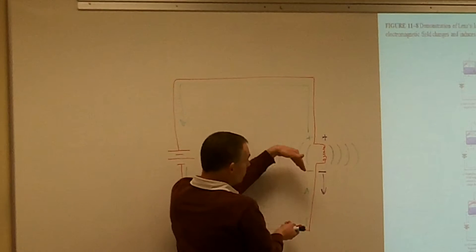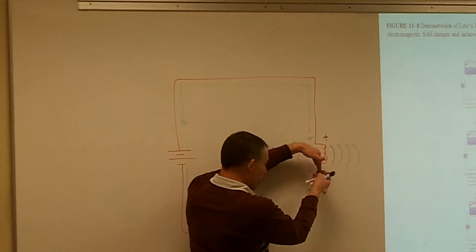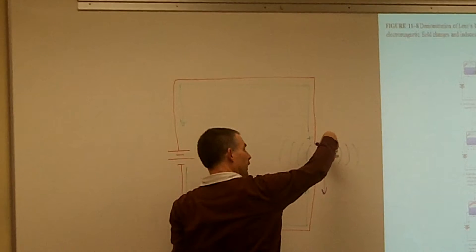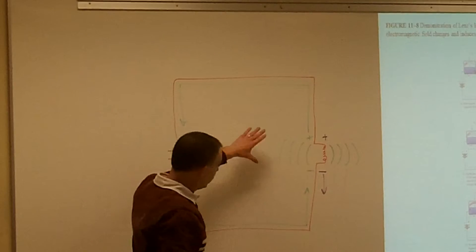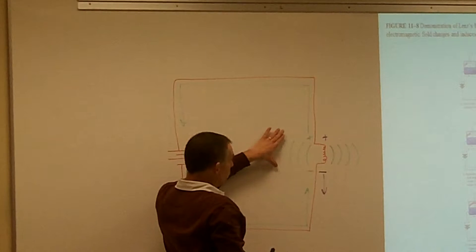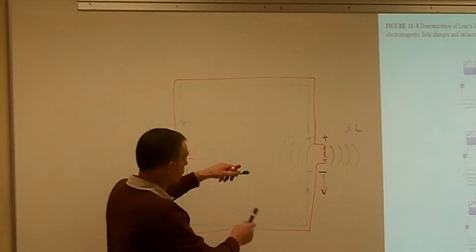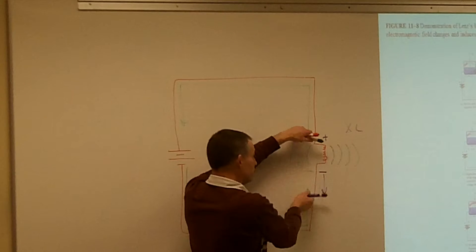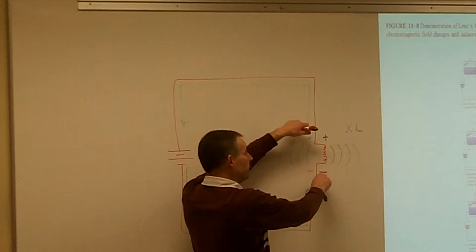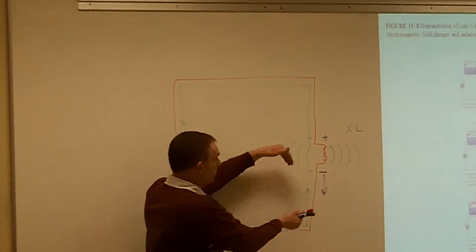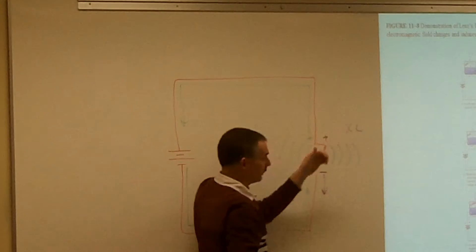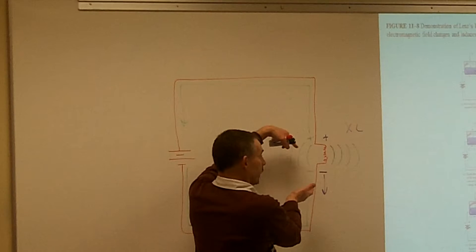It's going to have opposition to current. Unlike a capacitor where it has opposition to voltage, an inductor is going to have opposition to current. As these lines of magnetic flux are being built up, they're crossing the windings and that induced current is fighting the incoming current - they're going to cancel each other out, because it's inducing its own voltage, creating its own current. So when I first apply my voltage, I'm going to have a very high XL. In an RL circuit, the voltage would be all dropped across the inductor and nothing across the resistor.